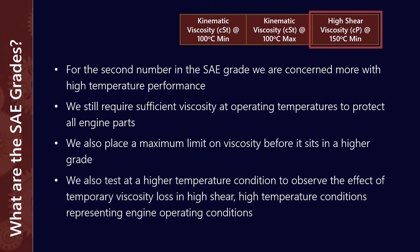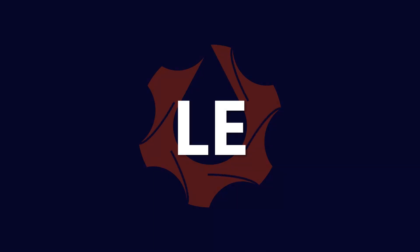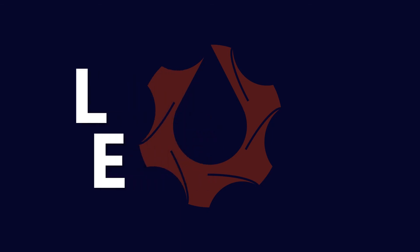The final test is high shear viscosity — the HTHS test. This is something I'll explore in more detail because it has received a lot more emphasis in recent years, particularly as it relates to fuel economy and fuel consumption. Effectively, it's trying to capture the effect of temporary viscosity loss under high shear. For example, around the piston rings, viscosity modifiers can temporarily lose their capacity to hold viscosity. So the high shear viscosity test measures the temporary degradation in viscosity index performance.